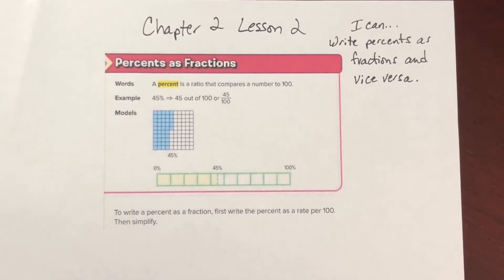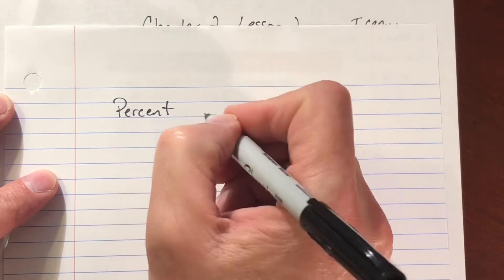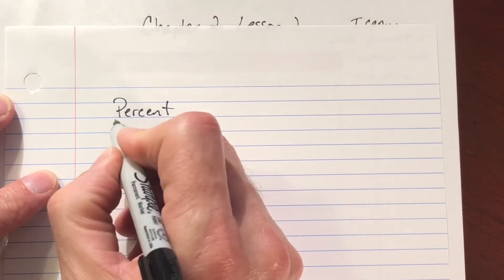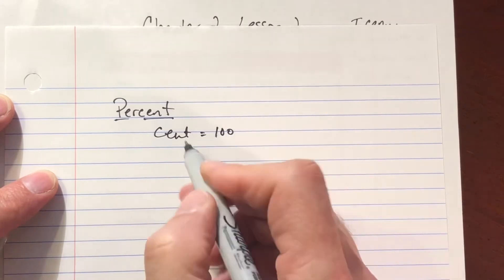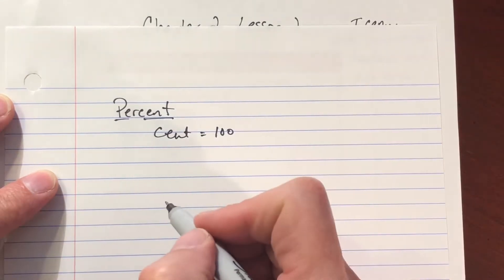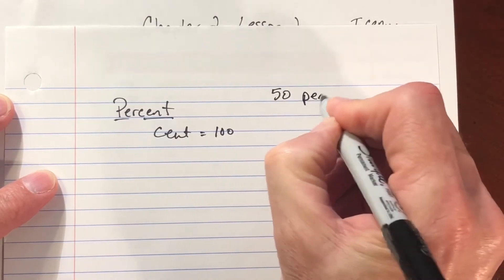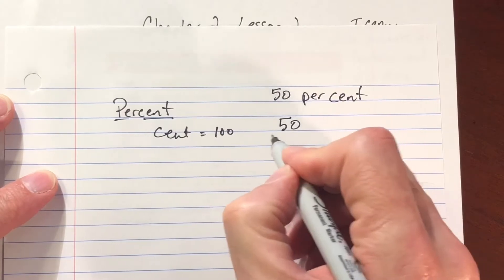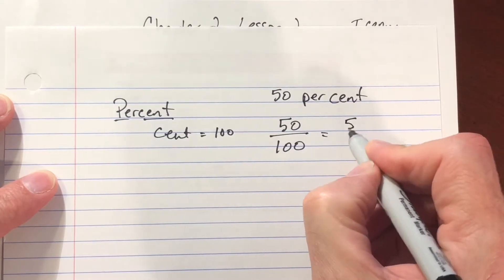The first thing we need to do is take a look at what percent even means. Percent means per every 100, because 'per' and then 'cent' — cent equals 100, such as 100 cents in a dollar, or centimeter is 1/100. So per cent. If I want 50 percent, that's 50 per 100, which equals 50 percent.